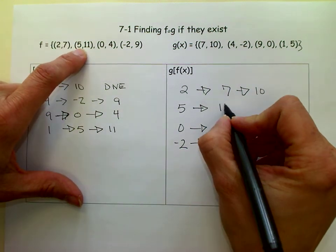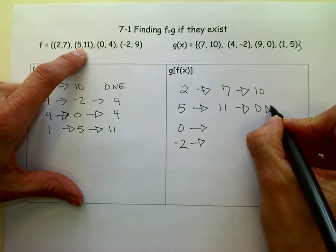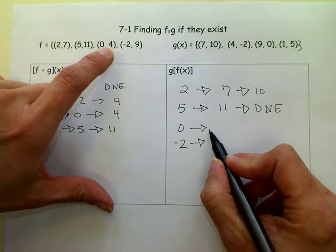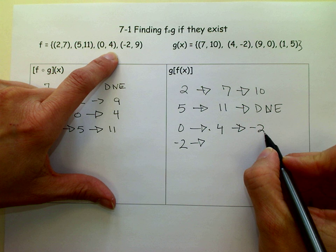We go to the 5, 5 yields us an 11. There's no 11 over here, so it does not exist. 0 yields us a 4, 4 yields us a negative 2, so we know it's negative 2.